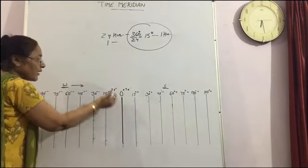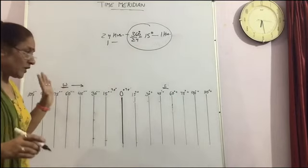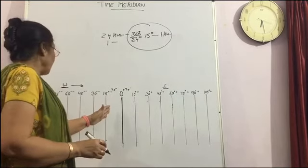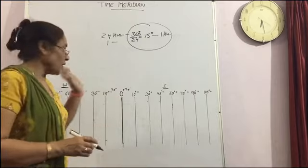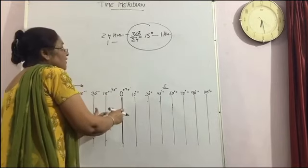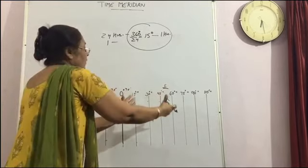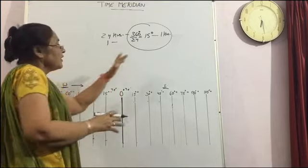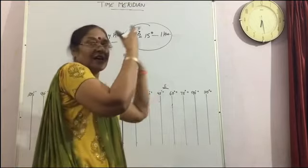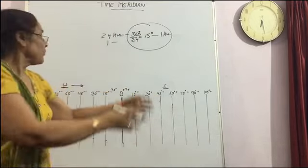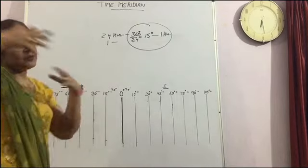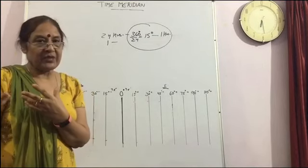This is prime meridian or you can say the Greenwich meridian. And it is 0 degree. It is on the 0 degree. And this divides the earth into 2 hemispheres. Eastern Hemisphere and Western Hemisphere. Eastern Hemisphere is ahead of the Greenwich Mean Time. And the Western Hemisphere is behind the Greenwich Mean Time.